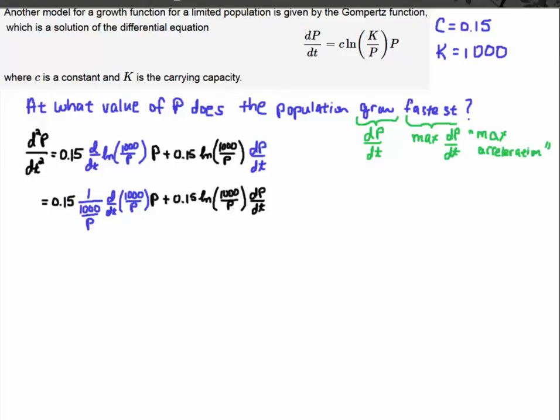Now let's compute these derivatives. So when I compute the derivative of the natural log term, I get 1 over its argument. So 1 over 1,000 over p, so that's going to be the reciprocal of 1,000 over p. And then I have to use a chain rule. Because p is a function of t, I have to take the derivative of 1,000 over p.